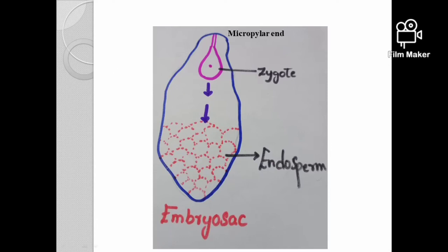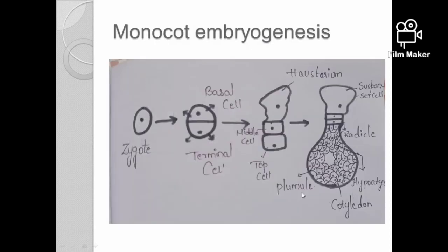Looking at the mature embryo comparison: the monocotyledon has only 1 cotyledon, while the dicotyledon has 2 cotyledons. This is the main structural difference seen in the mature embryo.